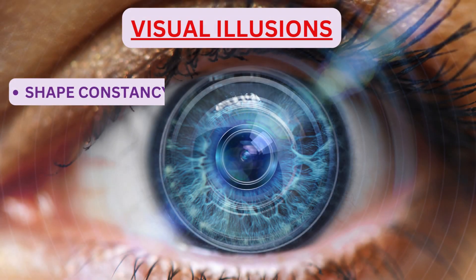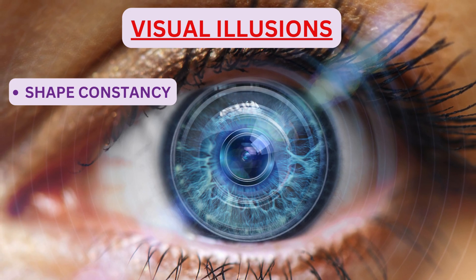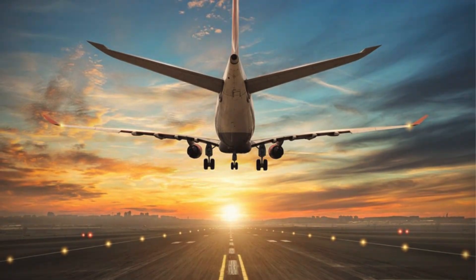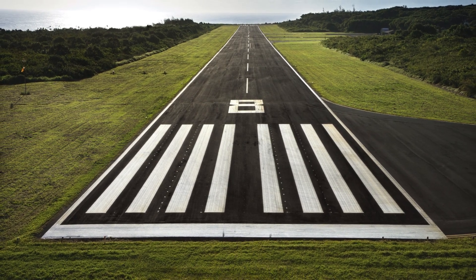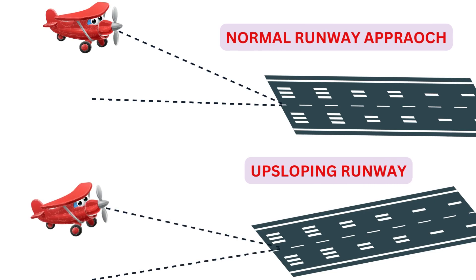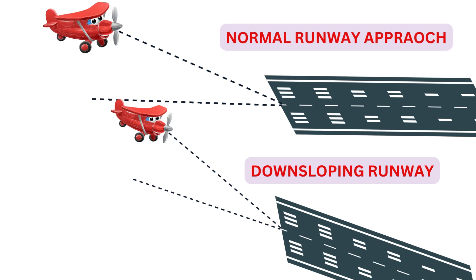We'll discuss the visual illusions first. The first is shape constancy. The pilot uses the shape of various objects, for example the runway, to get a perspective of his position in space above the runway. If the runway slopes upwards or downwards, this perspective gets changed. When landing on an up-sloping runway, the pilot feels that he is high on approach and so tends to get shallow on approach. A down-sloping runway leads the pilot to make a higher than normal approach.